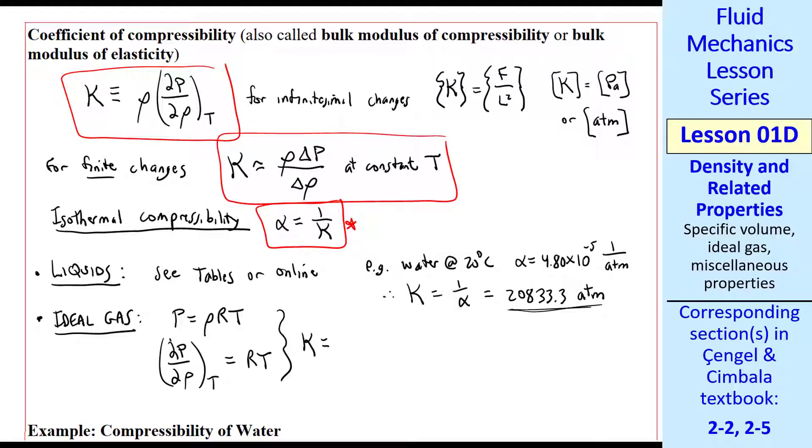And then from our definition, we get rho times that derivative, which was RT. We recognize this as pressure, p equals rho RT. So kappa is just equal to p for an ideal gas, which is nice and simple. But again, it's not a constant. Kappa varies with pressure when we're talking about changes in pressure.